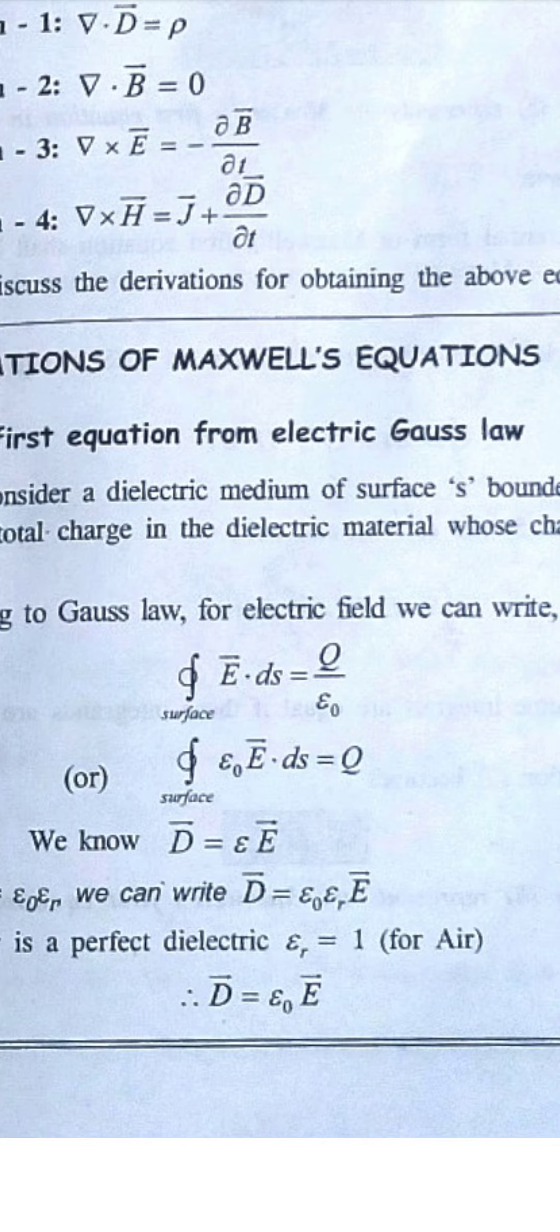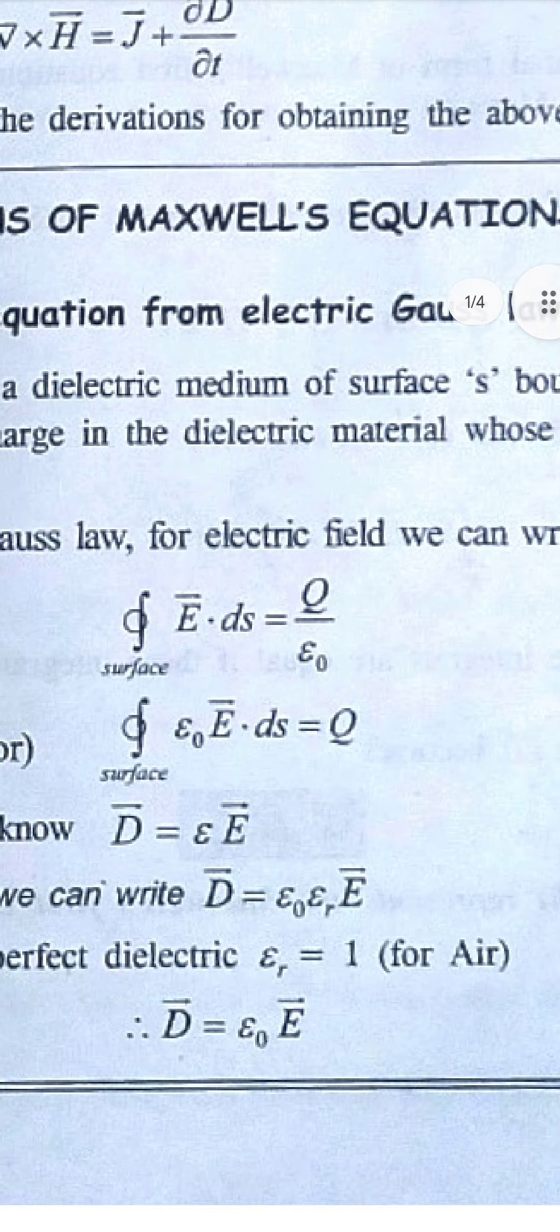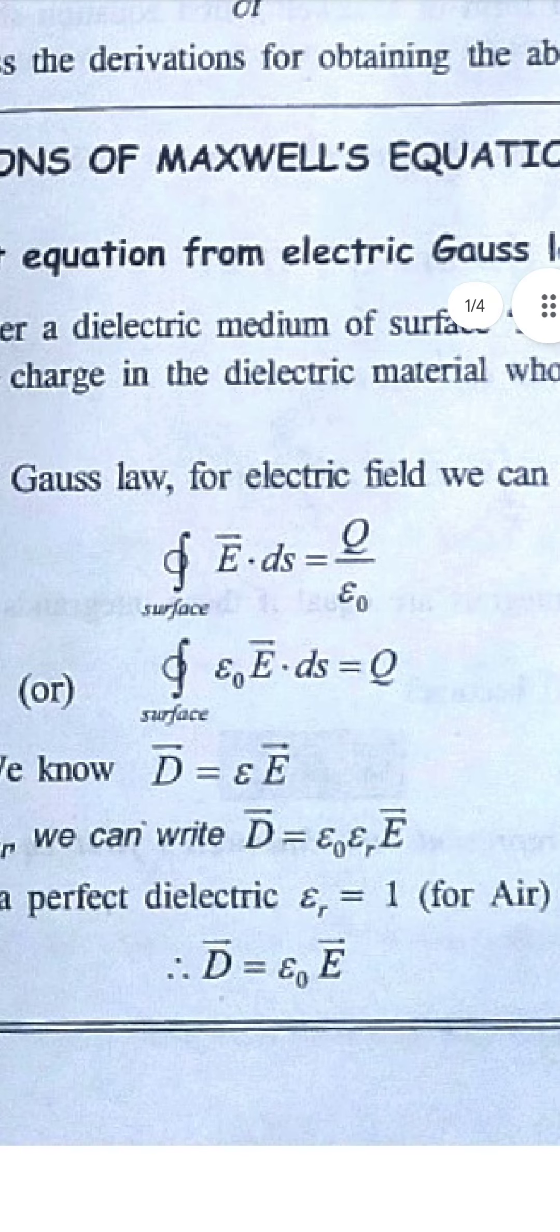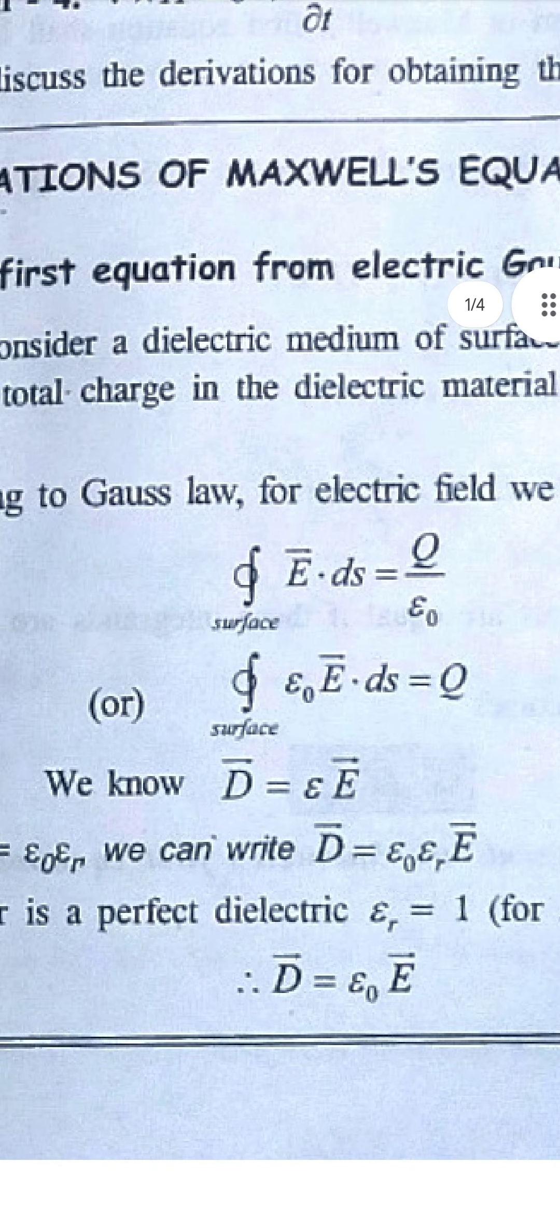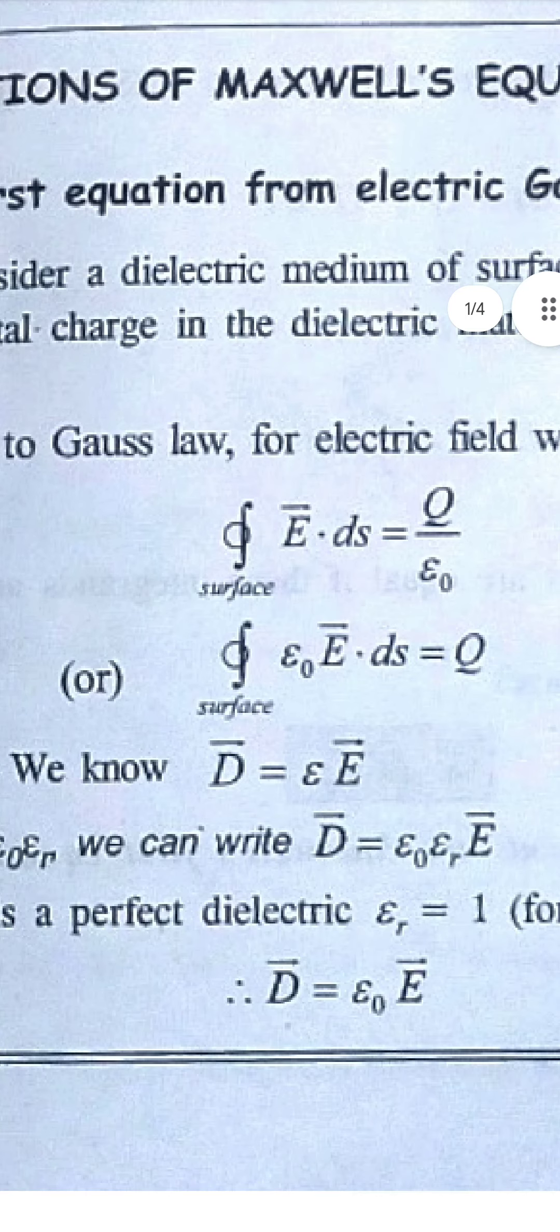If you have a small Q and a capital Q, this is the case. We can write epsilon E ds equals Q. For the displacement D vector, epsilon r is equal to 1.